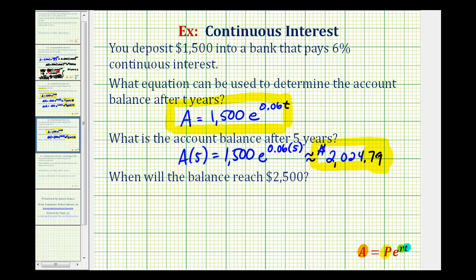Now this last question, we want to know when the balance will reach $2,500. So we're given A, we want to solve the equation for t, so we'll have an exponential equation.